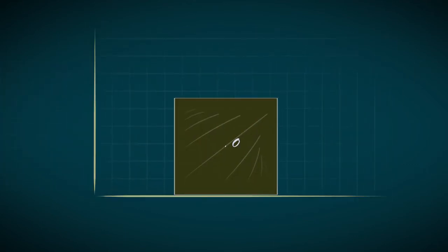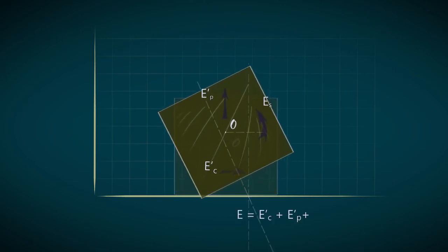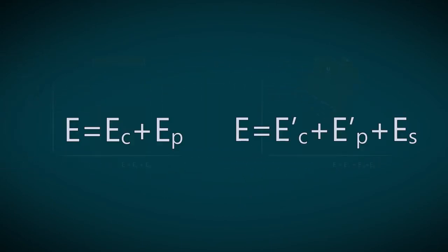In the second experiment, the bullet hitting the block also generates spinning energy. Thus, we have three components from the energy decomposition. But initial energy of the bullets is the same.